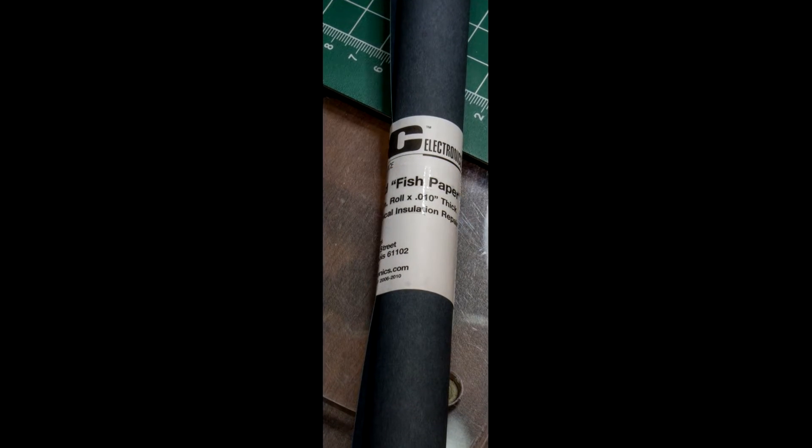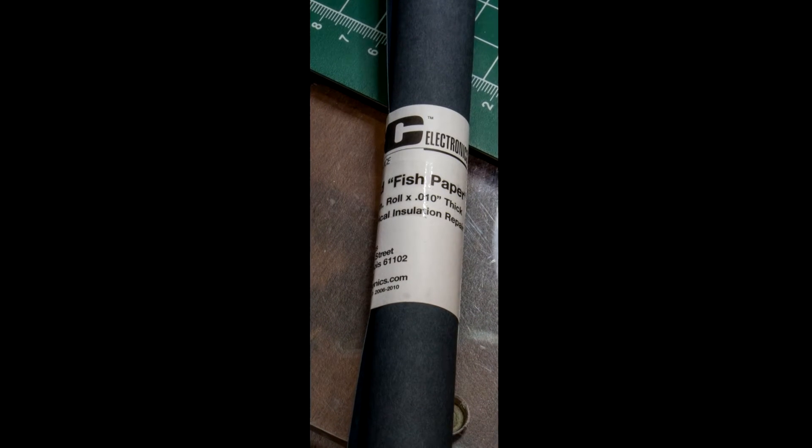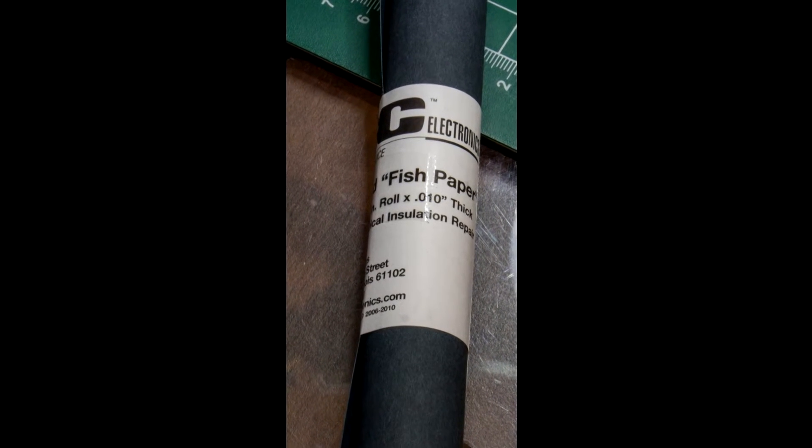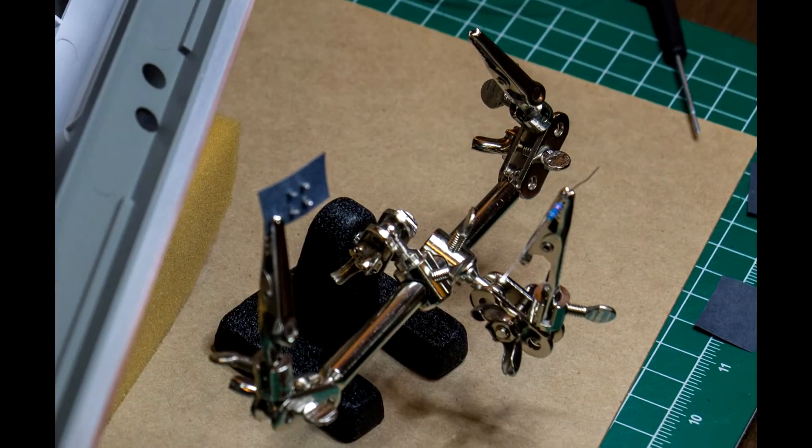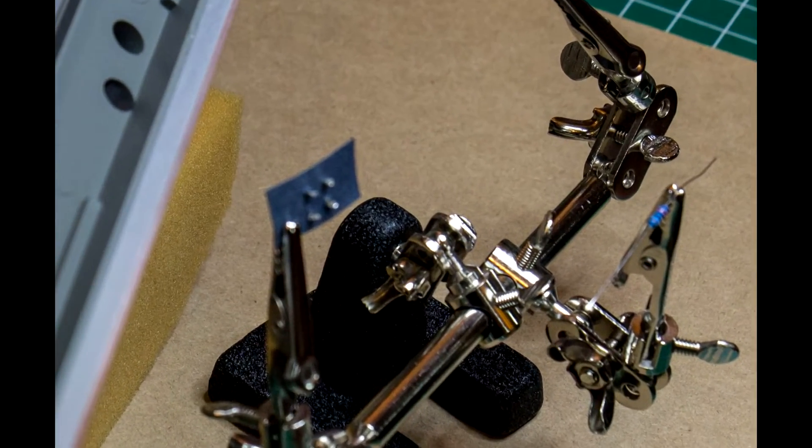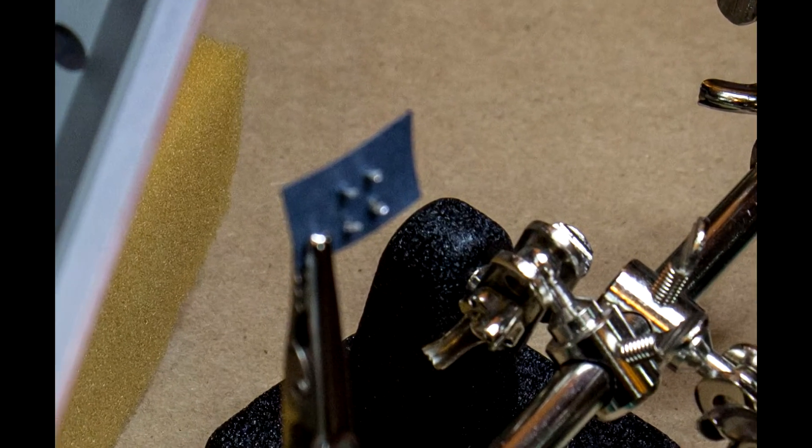I started by cutting some non-conductive fish paper into small strips to mount my LEDs to. I pushed the LED leads through the fish paper so I could tin the leads and begin soldering the wires and resistors.